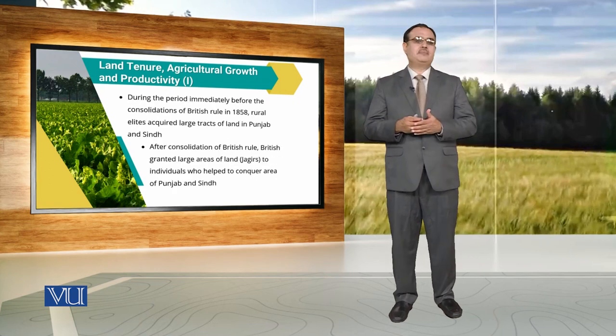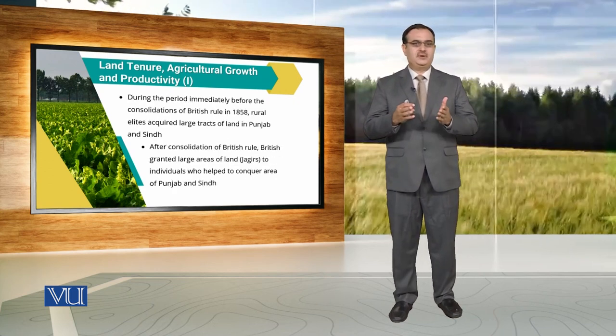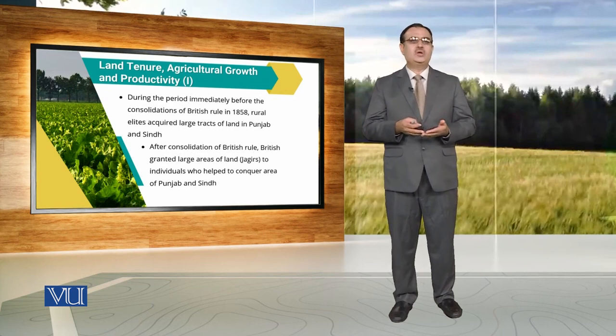When we talk about British rule, just before the implementation of British rule in 1858, they acquired large tracts of land in Punjab and Sindh. And after the consolidation of British rule, they also granted large areas of land to individuals who helped them to conquer and get the occupancy of this region.